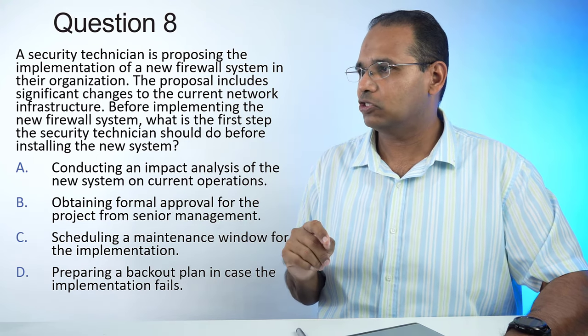Question 20: An organization wants to enhance its security measures to prevent employees from inadvertently installing harmful applications. What is the most effective strategy? The best answer is implementing an application allow list. It's a list of applications that are the only apps you can have installed on your computer — everything else is disallowed. Regular malware scans won't work because if the application is not malware, it wouldn't detect it. A VPN is used to connect to remote sites. User access control is about controlling what people have access to, not what they can install.